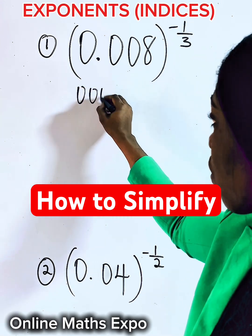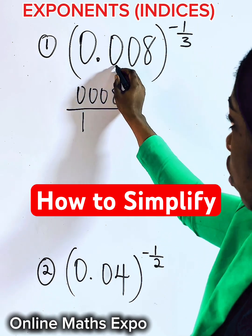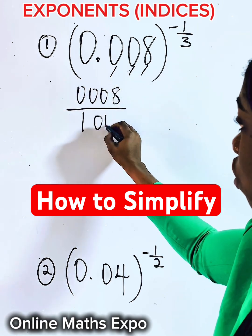So it gives us 0.008 divided. This decimal point turns to 1. The three digits after the point turns to three zeros.